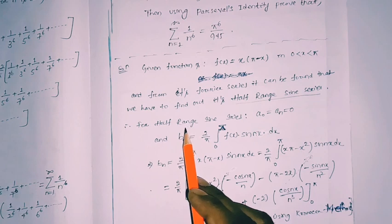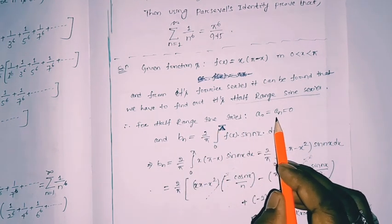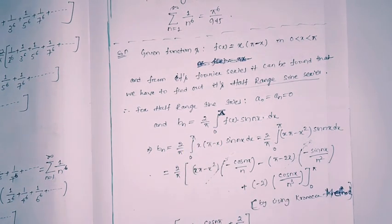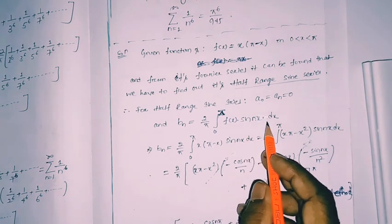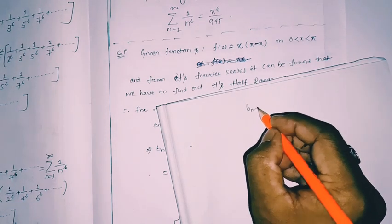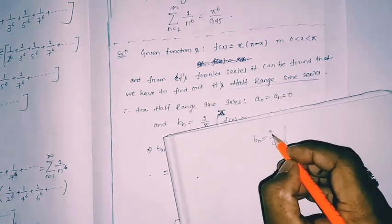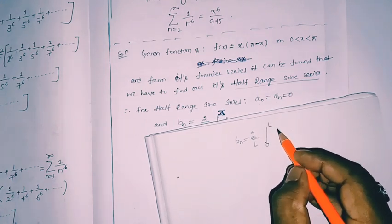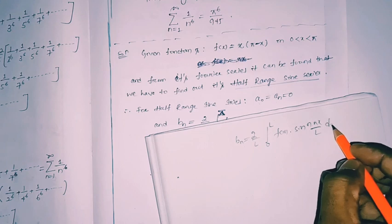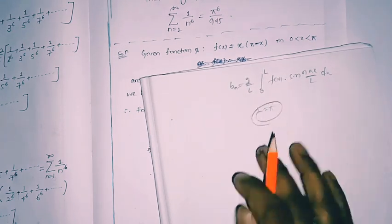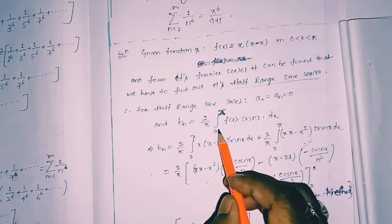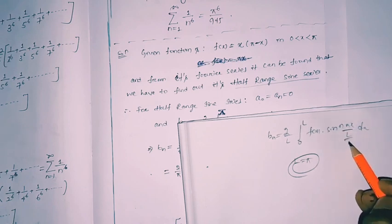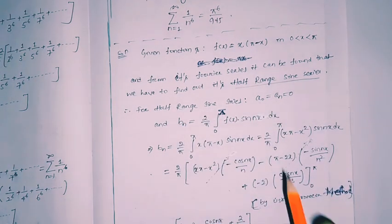For the half-range sine series, a₀ and aₙ are equal to zero. We only need to find bₙ. In general, bₙ = (2/l) ∫₀ˡ f(x) sin(nπx/l) dx. Here l = π, so the expression becomes bₙ = (2/π) ∫₀^π f(x) sin(nx) dx, since π/π cancels.